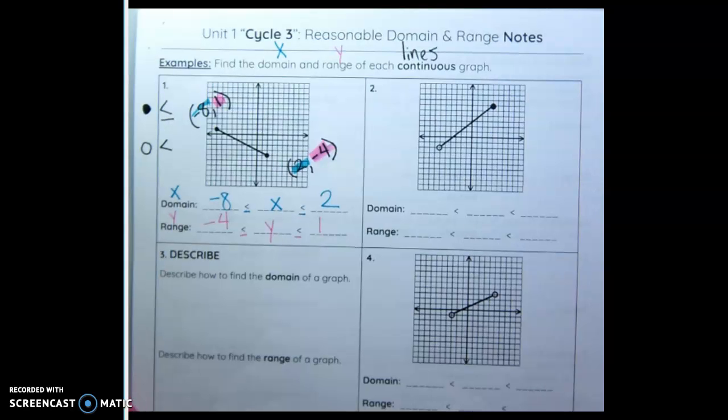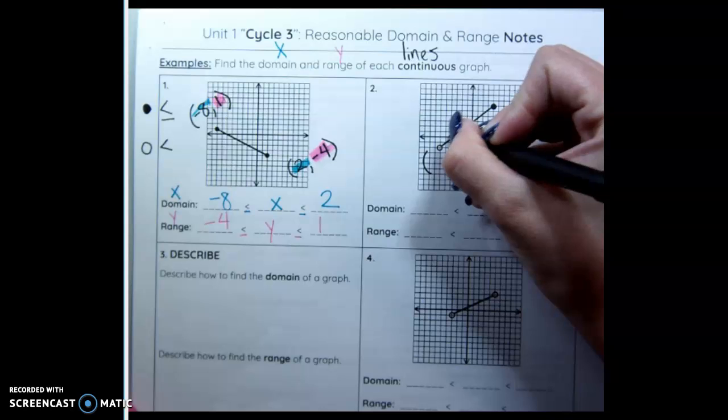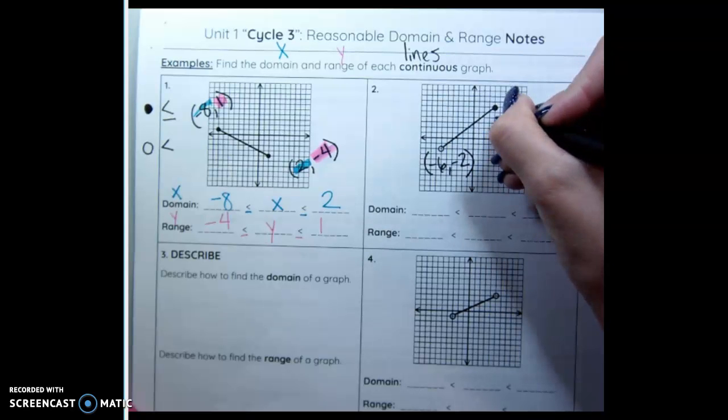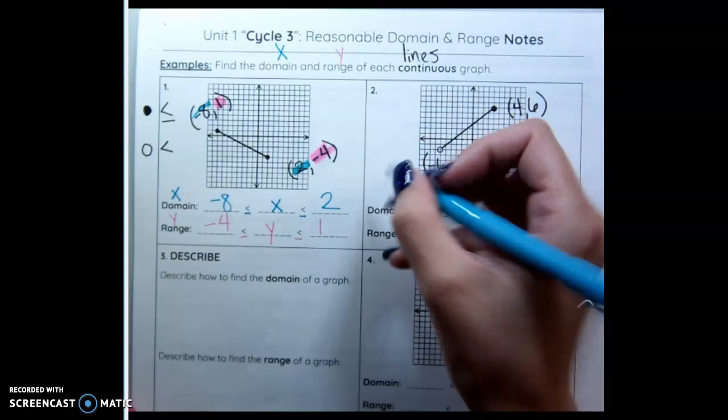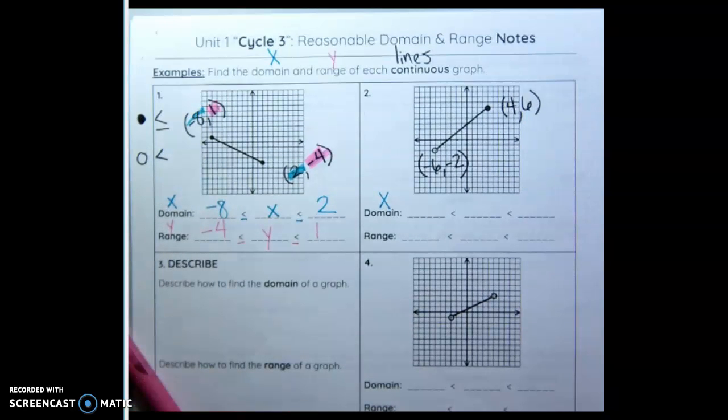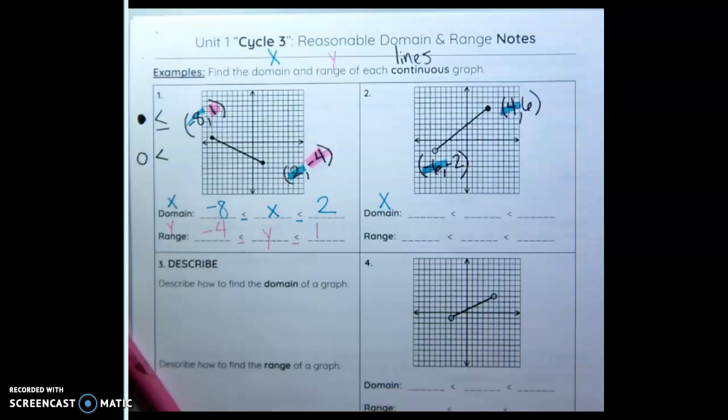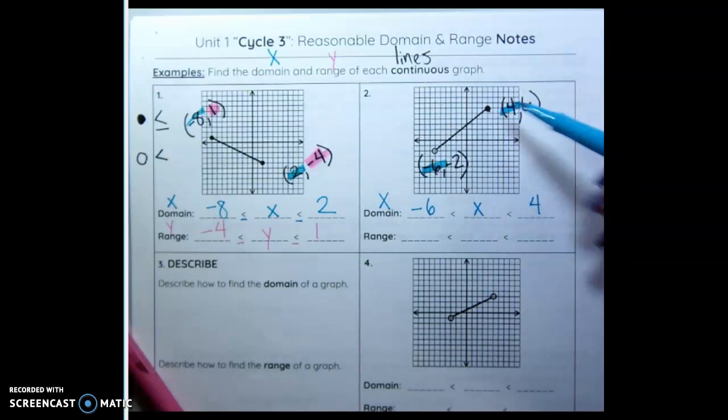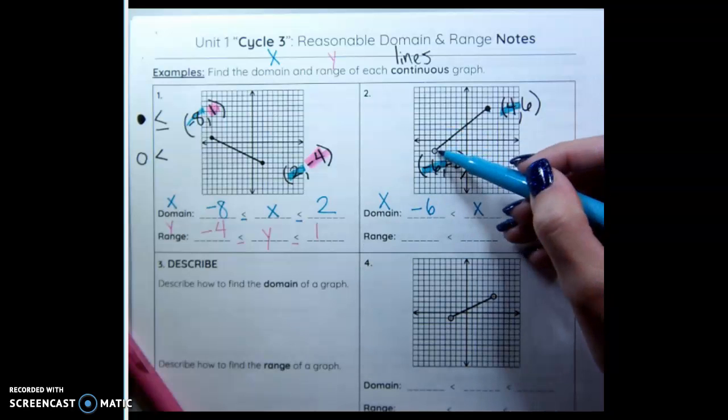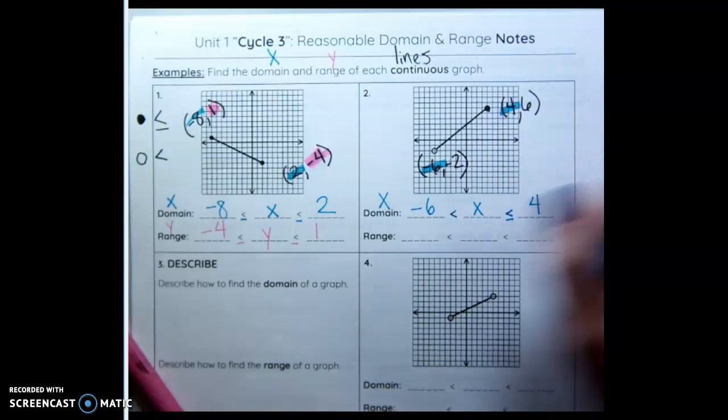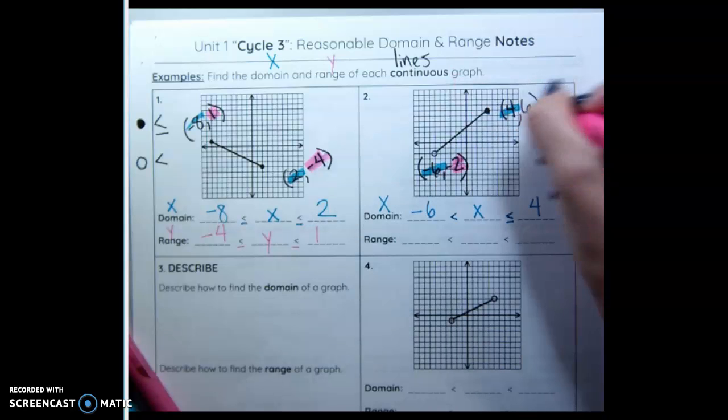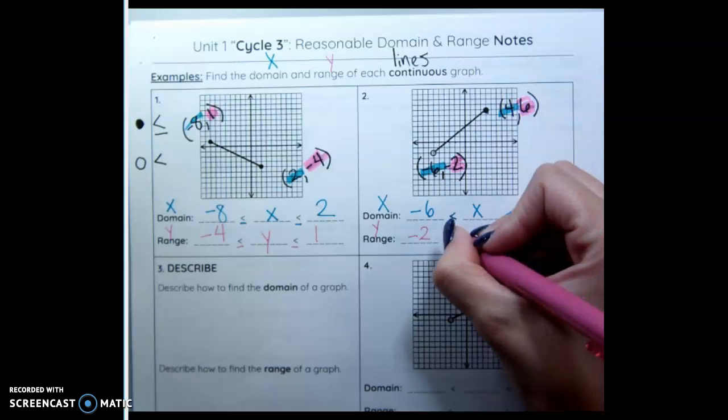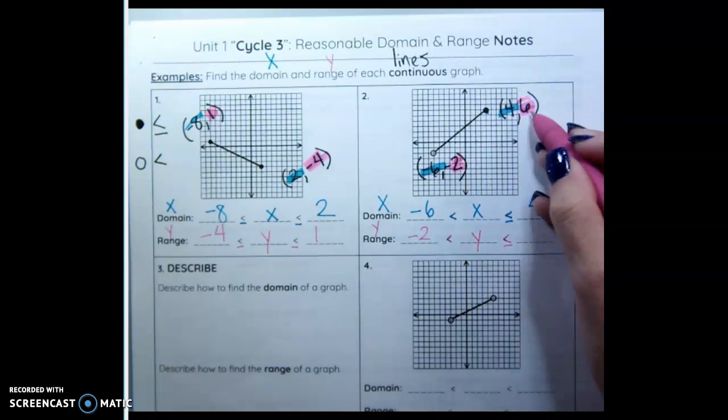Now we are going to do number 2. I always start by labeling my points. Negative 6, negative 2. My domain is still my x values. I'm going to highlight both of them. It goes from negative 6 to positive 4. Now the dot next to the 4 is filled in. So it needs to be equal to. This one is not filled in. So it does not need to be equal to. Now I'm going to do the same thing with my range. I have negative 2 and 6. Which of those is less? Negative 2. That's open. So I don't put the line. Y goes in the middle. This one's closed. It's 6.